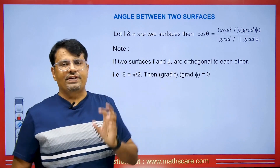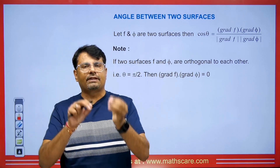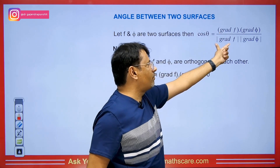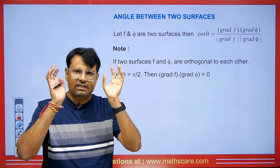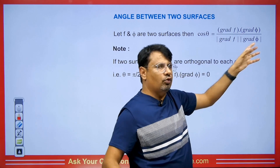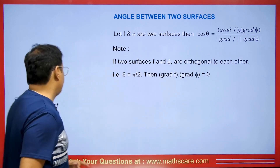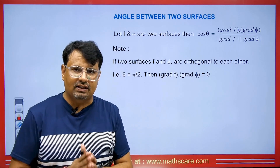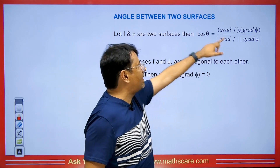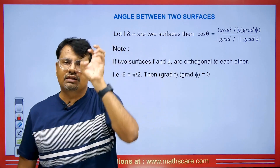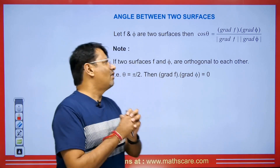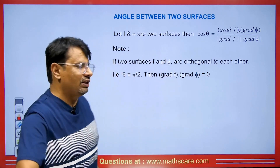Next, we will discuss the angle between two surfaces. If we have two surfaces and their point of intersection, and you need to find the angle at that point between those two surfaces, the formula is: cos θ = (∇f · ∇g) / (|∇f| × |∇g|). We find the unit normal vectors of each surface and calculate the dot product. If the angle between the two is 90 degrees, then cos 90 = 0, so the condition becomes ∇f · ∇g = 0. If the dot product of the gradients of two surfaces is 0, the angle between them is always 90 degrees — they are orthogonal. Pay attention as it is important for the exam.